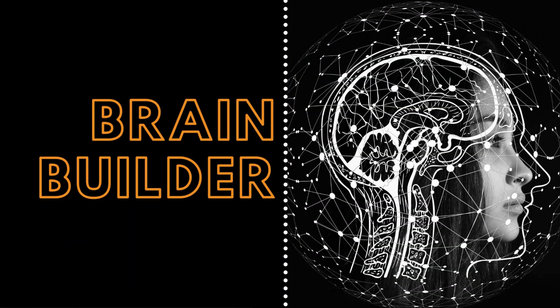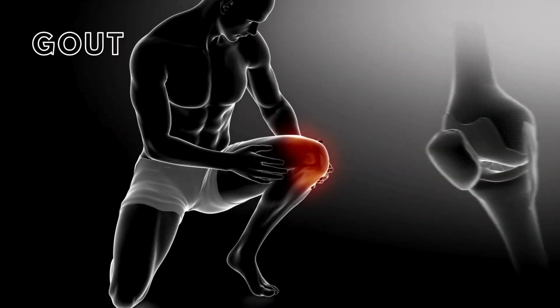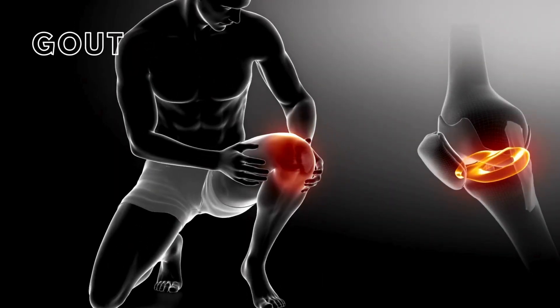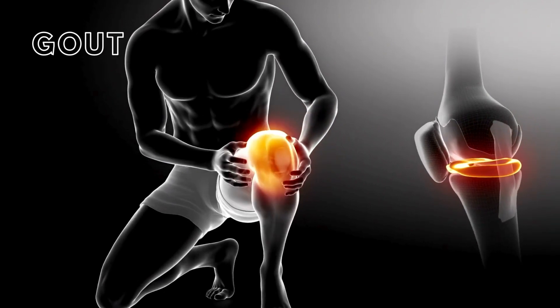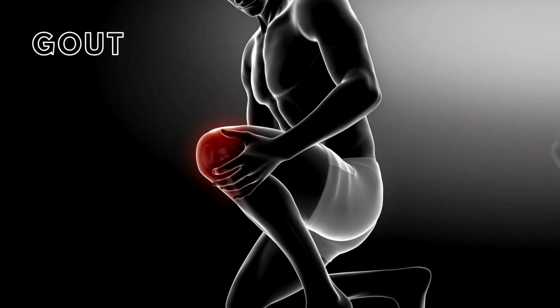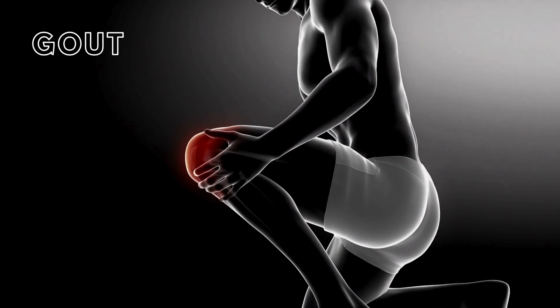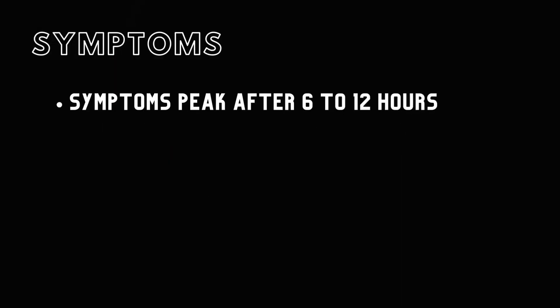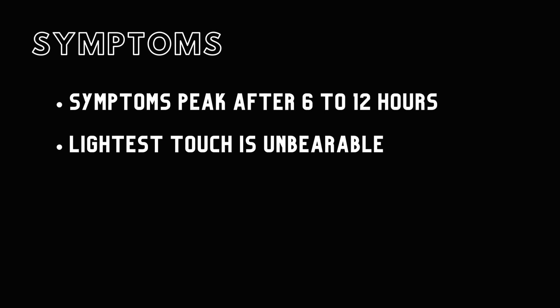Let's take a look at the symptoms, causes, and treatments for gout and then give a patient example. Gout announces its presence with a bang — sudden, intense pain accompanied by swollen, red joints that feel like they're on fire. This discomfort peaks around 6 to 12 hours after the symptoms first strike, making even the lightest touch unbearable.